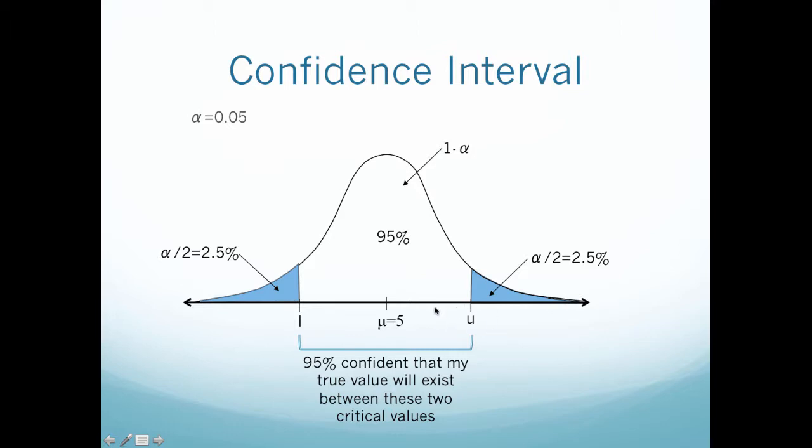So this is the opposite calculation that I've done before. Before I had critical values and I found an alpha based on that. In confidence interval calculations, I'm going to be given an alpha and I want to calculate what these critical values are based on that. So we call this interval right here the values between my lower critical value and my upper critical value, I'm going to call that interval right there my confidence interval.